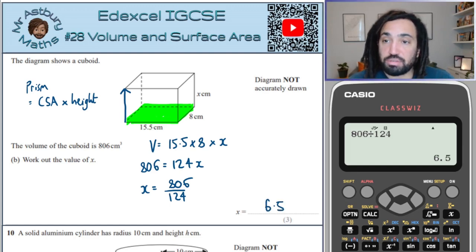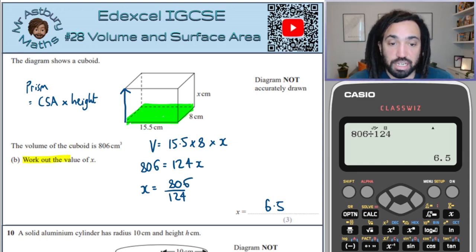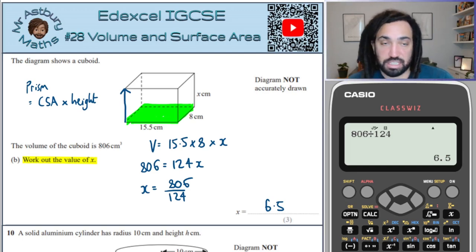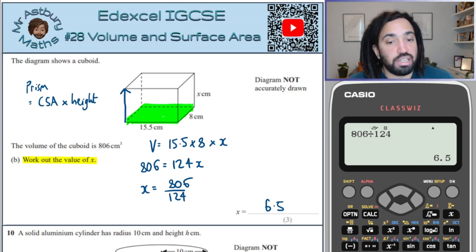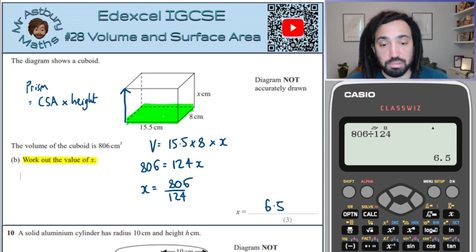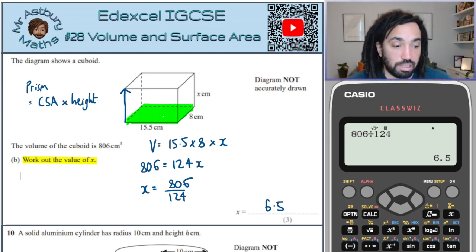And we get a nice number of 6.5. So we know, again, another little tip is that they don't ask us to round it to a particular value, it just says work out x. So if you get an answer like 18.1367854321, then you know you've probably made a mistake. But 6.5 is a lovely number, nice and round, so we're good.